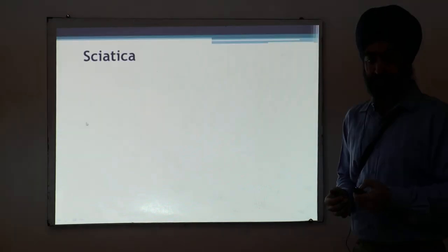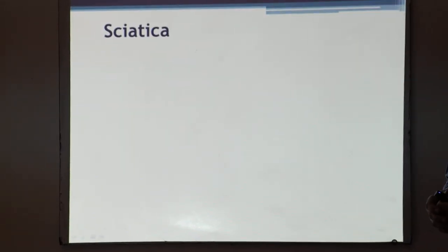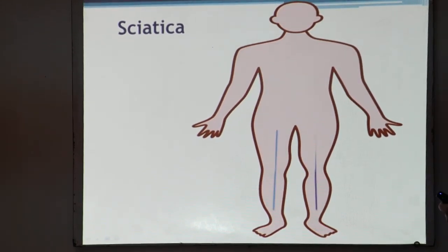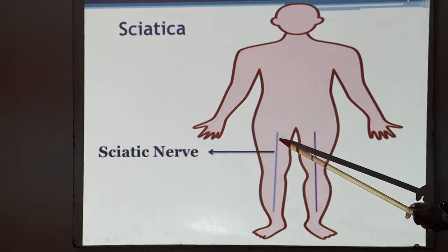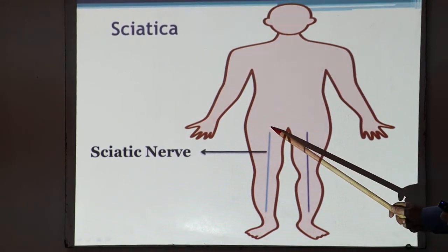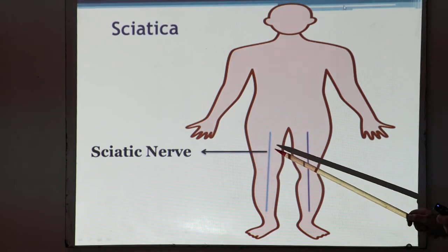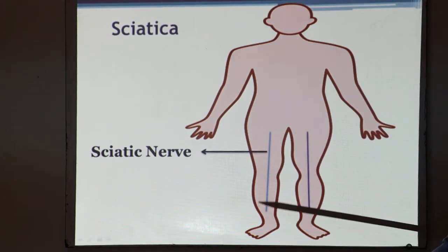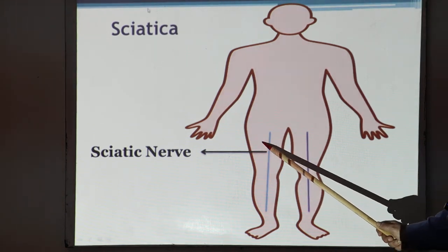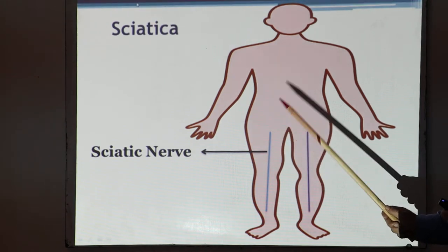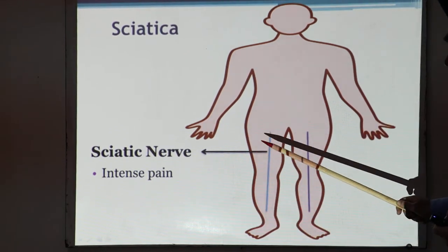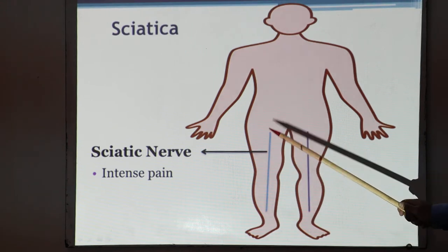Starting with sciatica: in human beings there are sciatic nerves in the hip region, going towards the foot in both legs. Due to some reasons, there is inflammation in the sciatic nerve — sometimes it is damaged, sometimes inflammation is present.